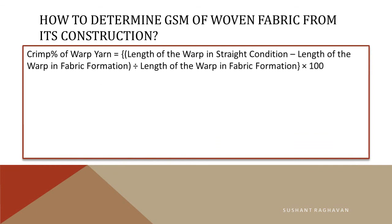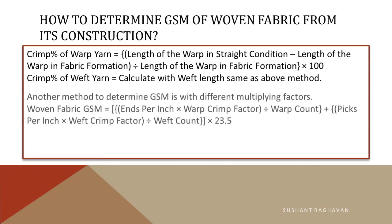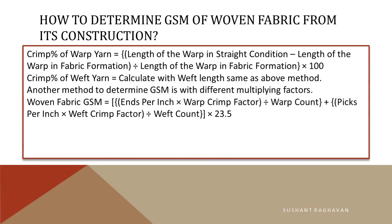Crimp percentage of warp yarn = (length of warp in straight condition − length of warp in fabric formation) ÷ length of warp in fabric formation × 100. Crimp percentage of weft yarn is calculated with weft length using the same method. Another method to determine GSM uses different multiplying factors: woven fabric GSM = (ends per inch × warp crimp factor ÷ warp count + picks per inch × weft crimp factor ÷ weft count) × 23.5.